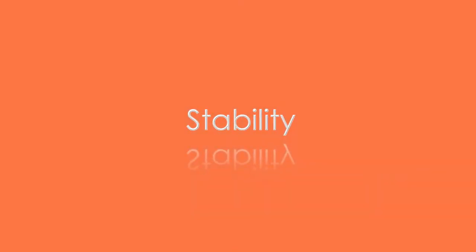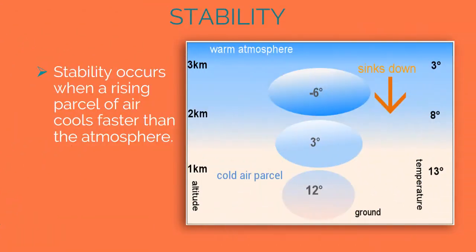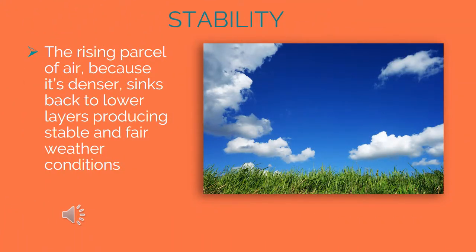Stability occurs when a rising parcel of air cools faster than the atmosphere. The rising parcel of air, because it's denser, sinks back to lower layers, producing stable and fair weather conditions.